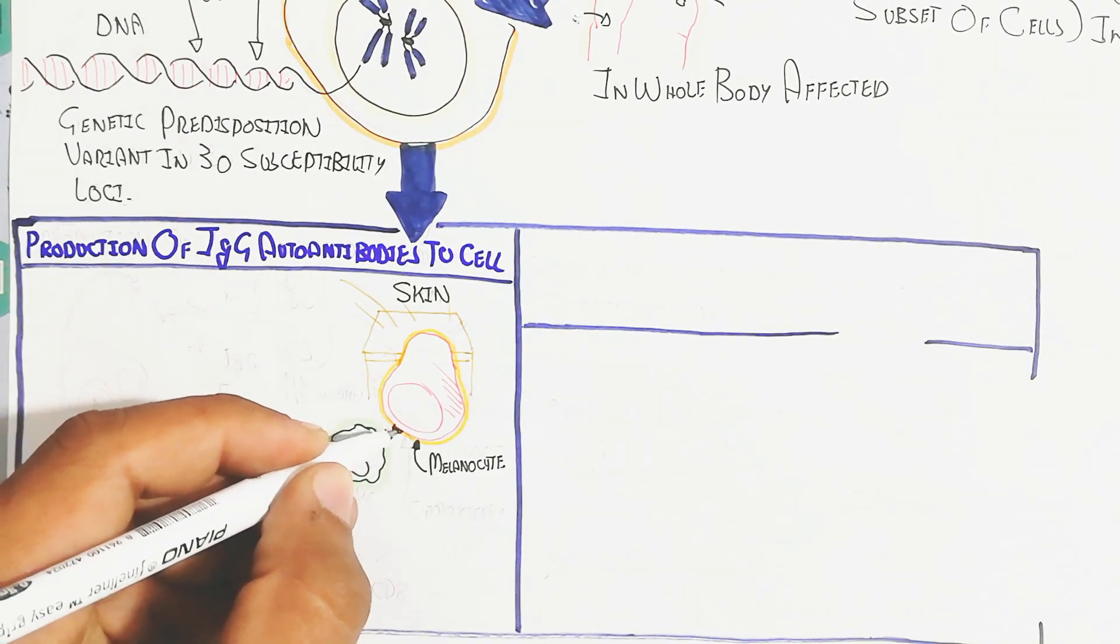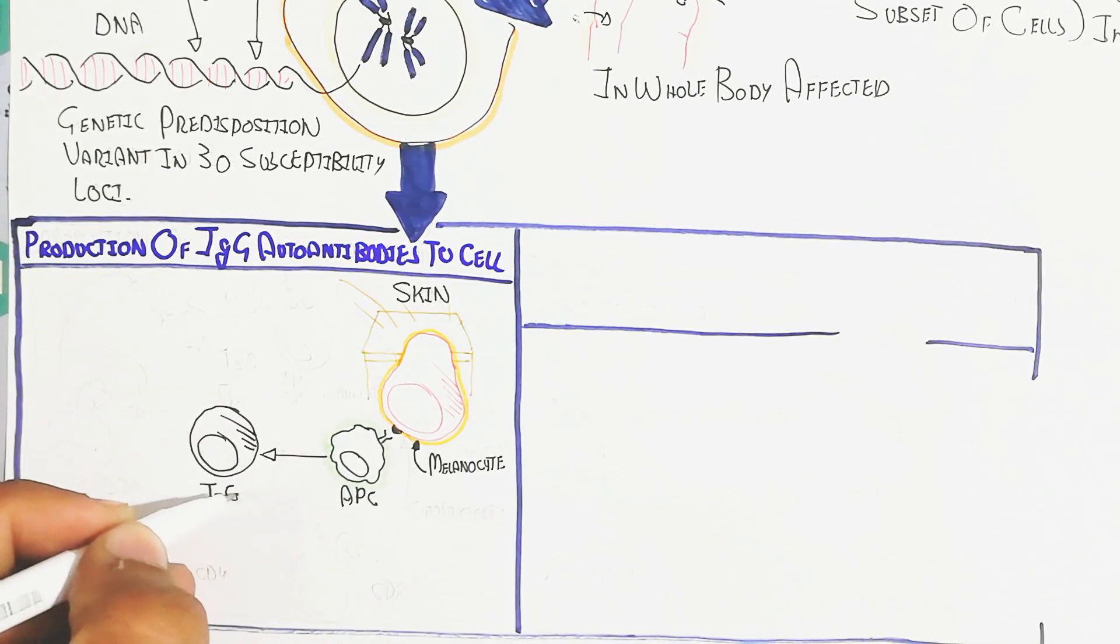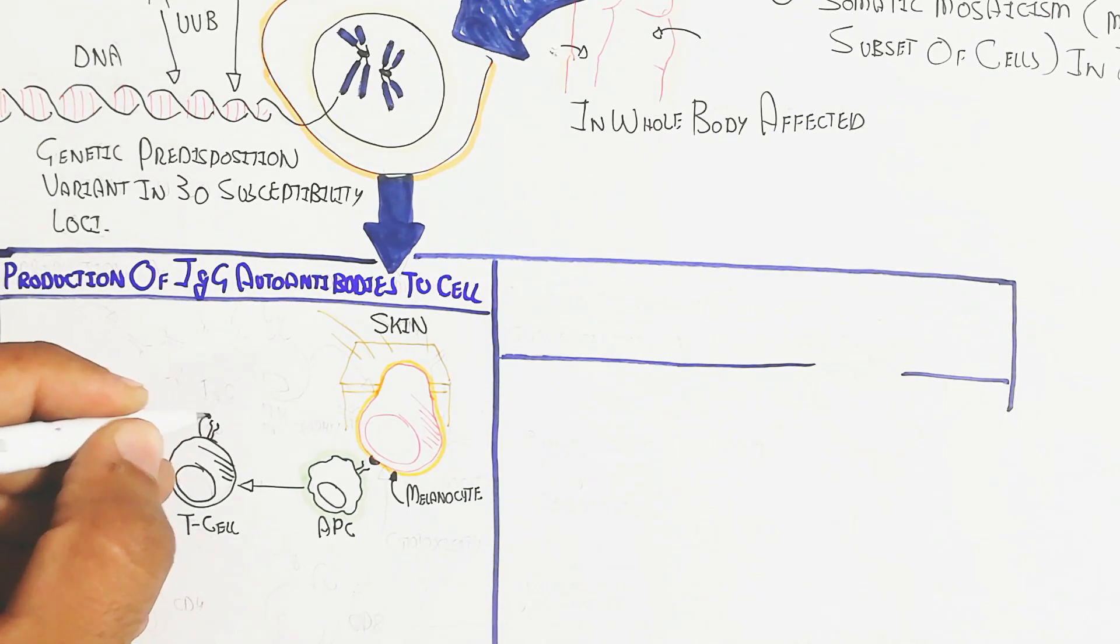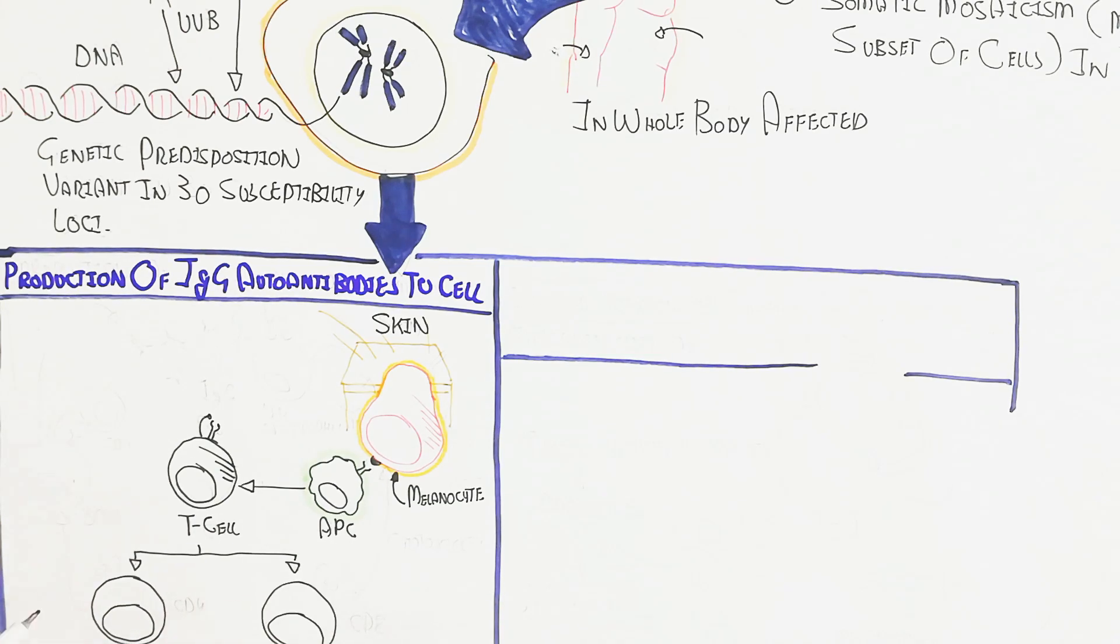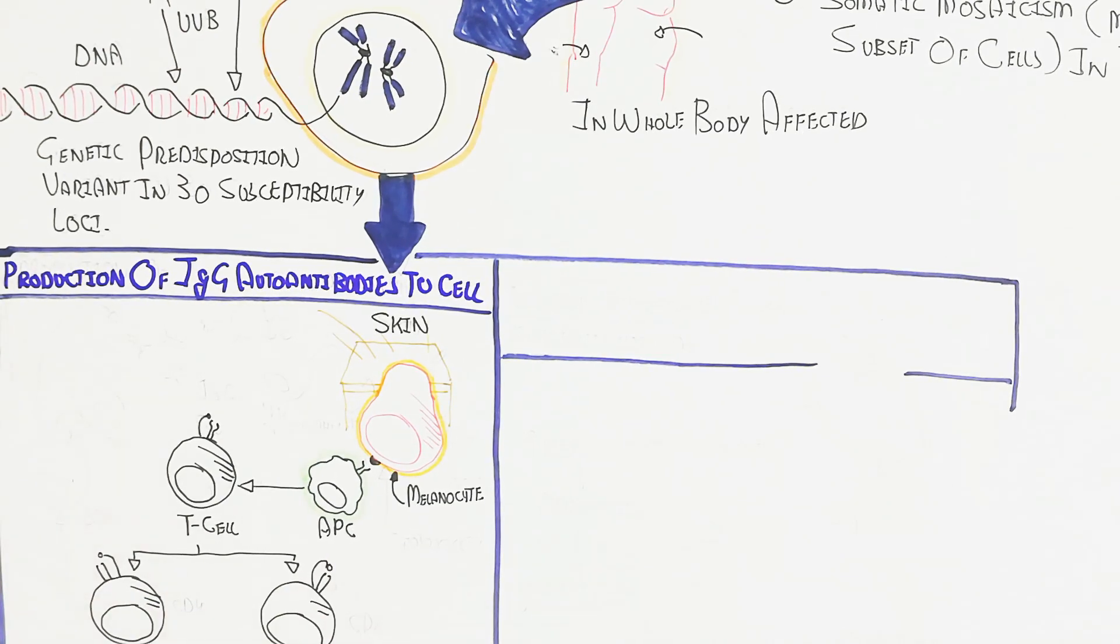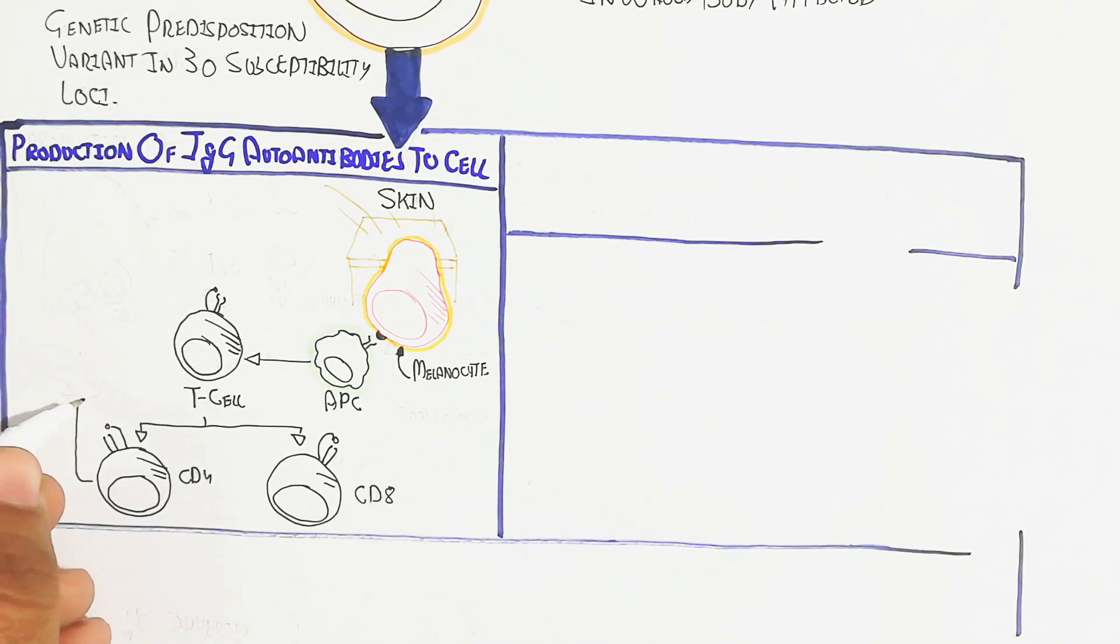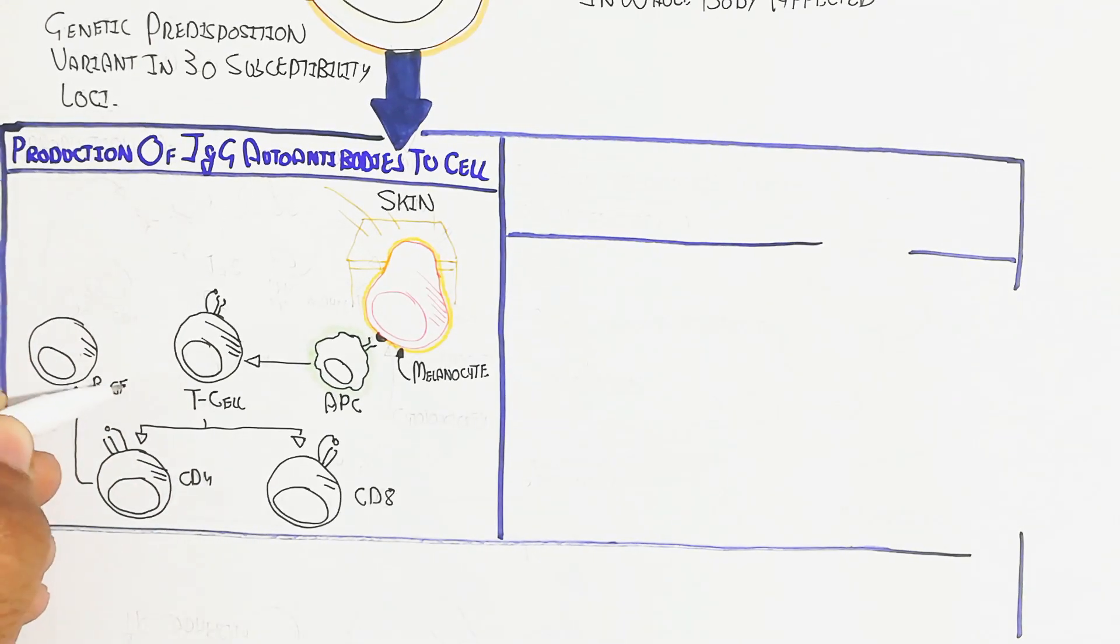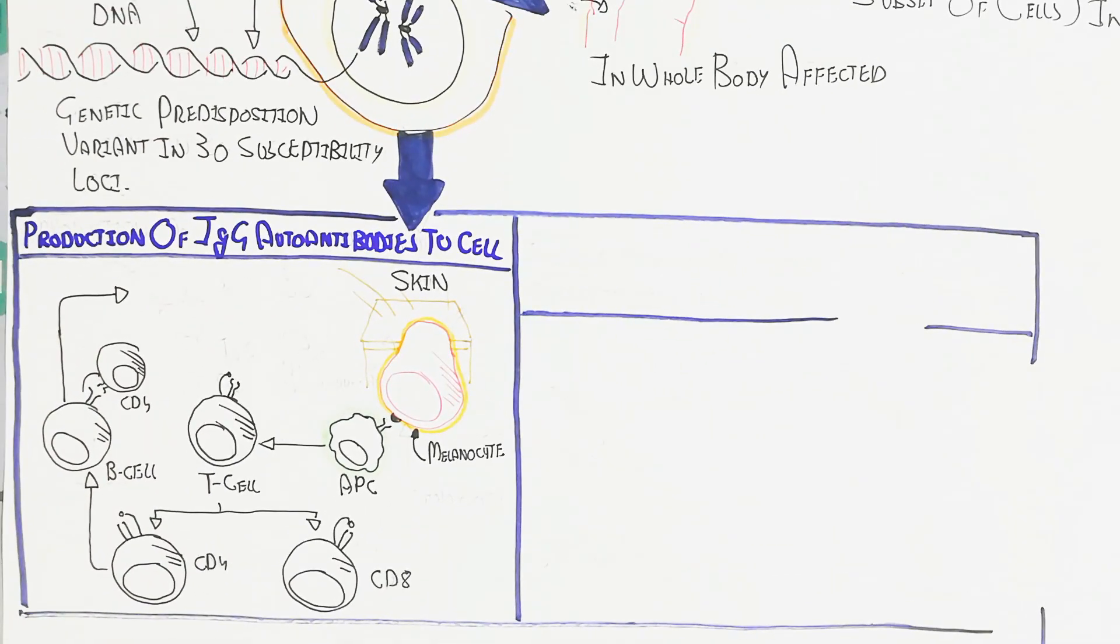The antigen-presenting cell will be recognized through naive T cells, for example CD4. If the melanocyte is recognized, the antigen-presenting cell takes the antigen and the T cell proliferates into CD4 and CD8. CD4 recognizes naive B cells, which proliferate to produce plasma cells and B memory cells to produce IgG immunoglobulin antibody.